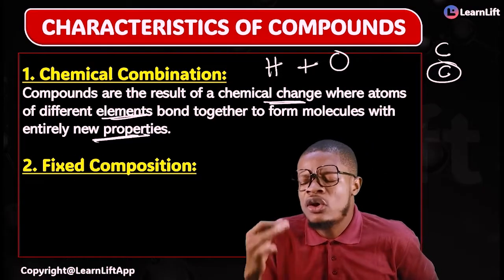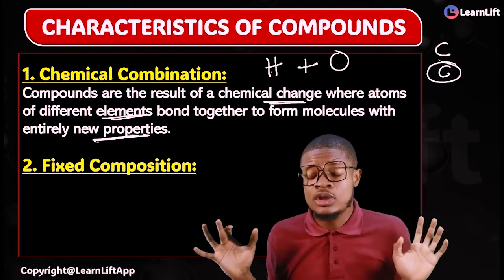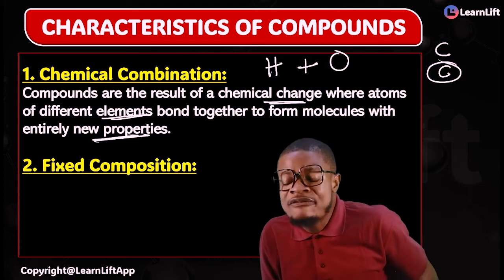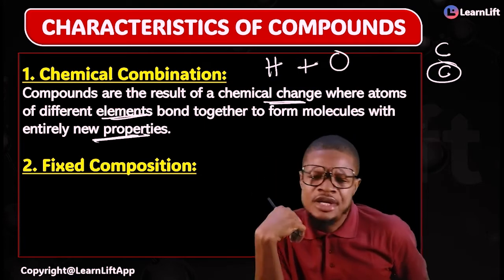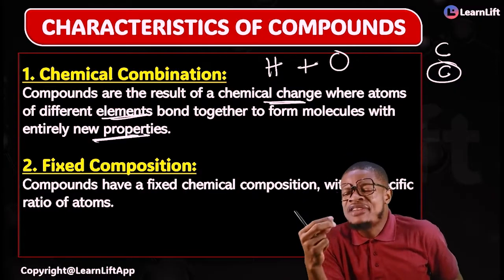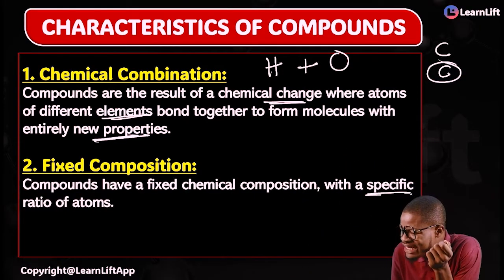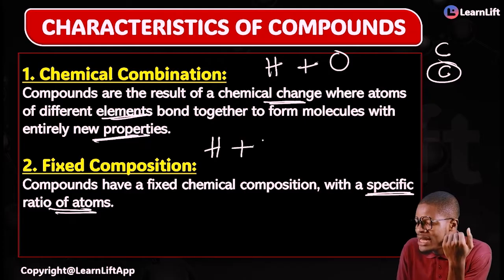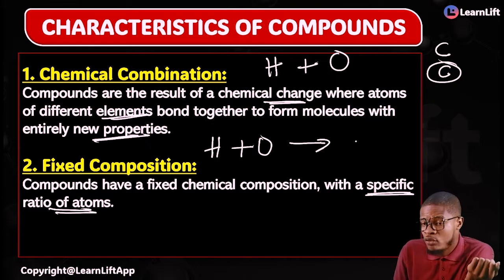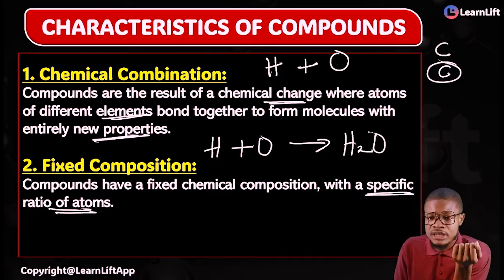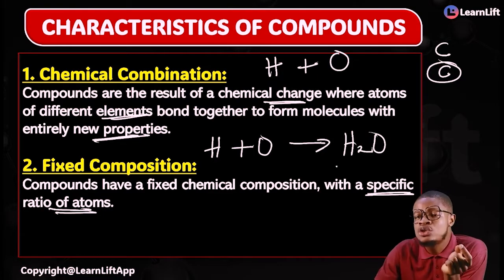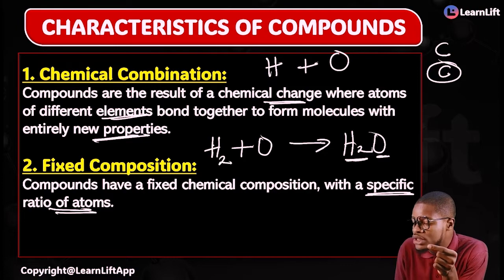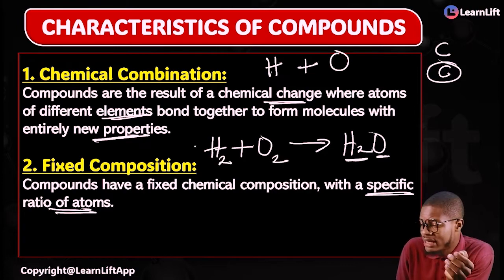Another property is called fixed composition. This is what distinguishes compounds from mixtures. Compounds have a fixed composition with a specific ratio of atoms. If hydrogen is combining with oxygen, I'm going to have water, and water is H₂O. What is the ratio of hydrogen to oxygen that will form water? Hydrogen here is 2, oxygen here is 1. That's why it's H₂O.